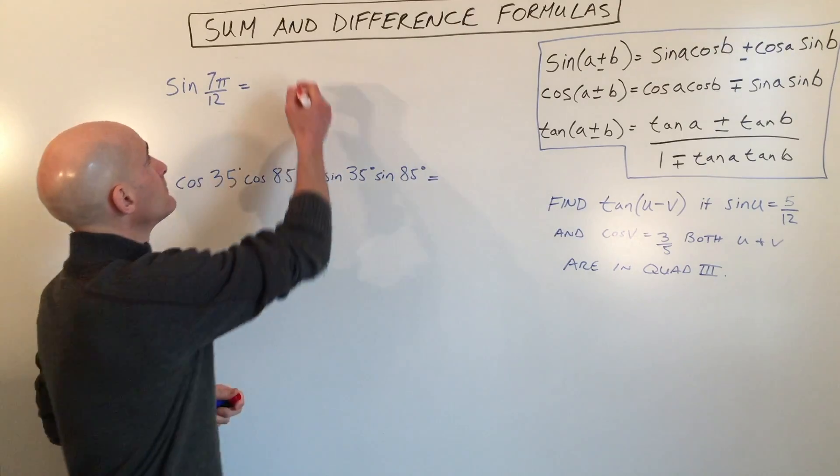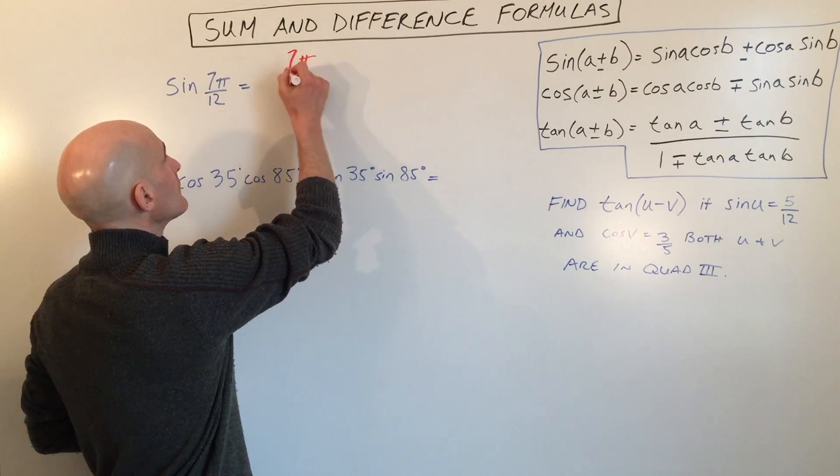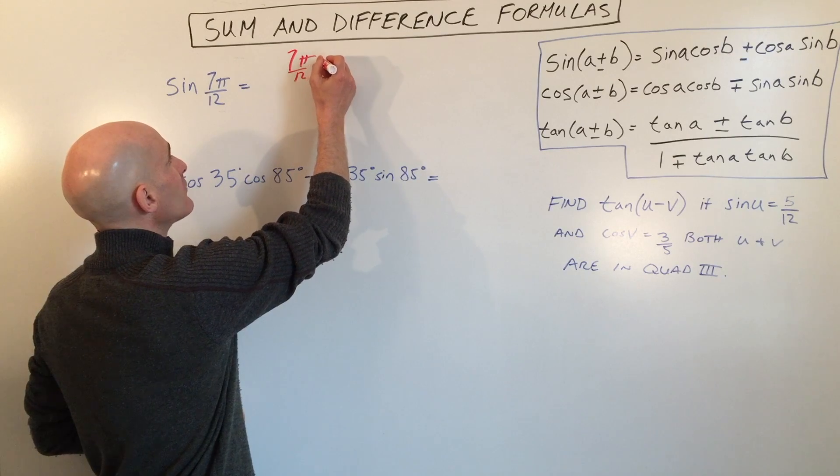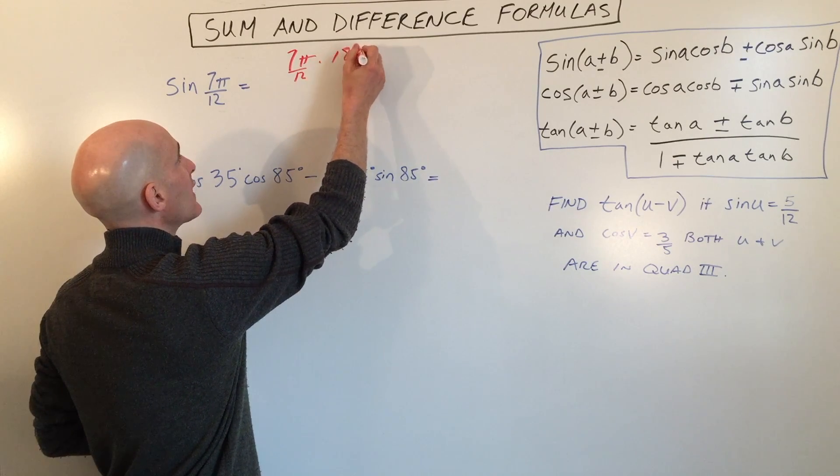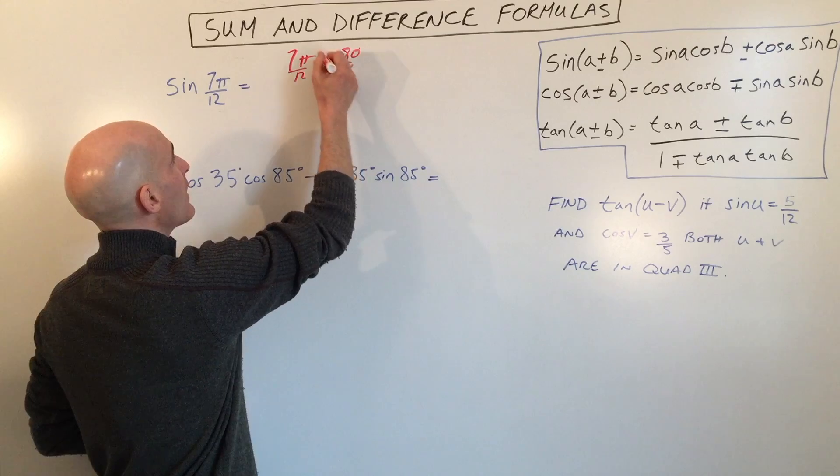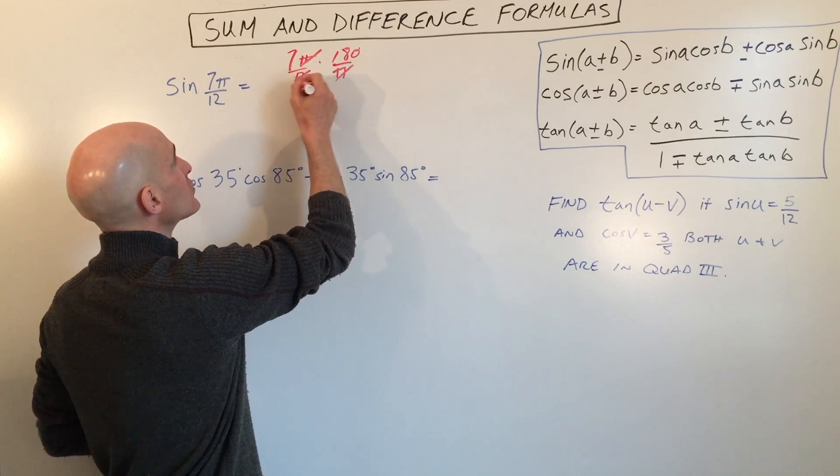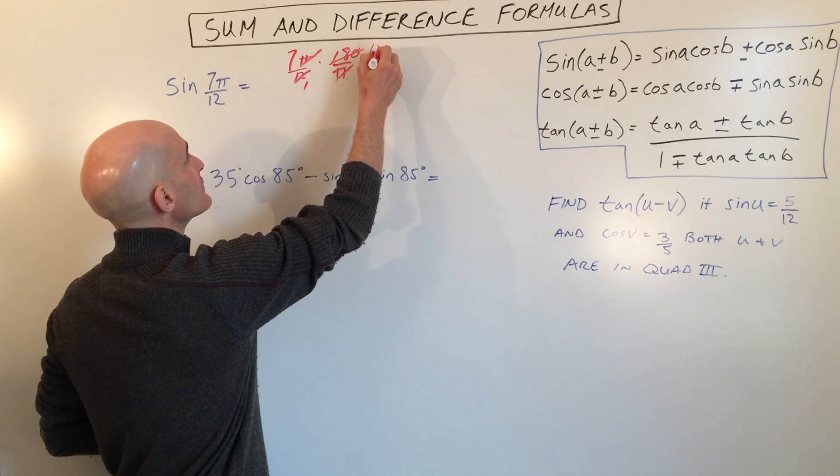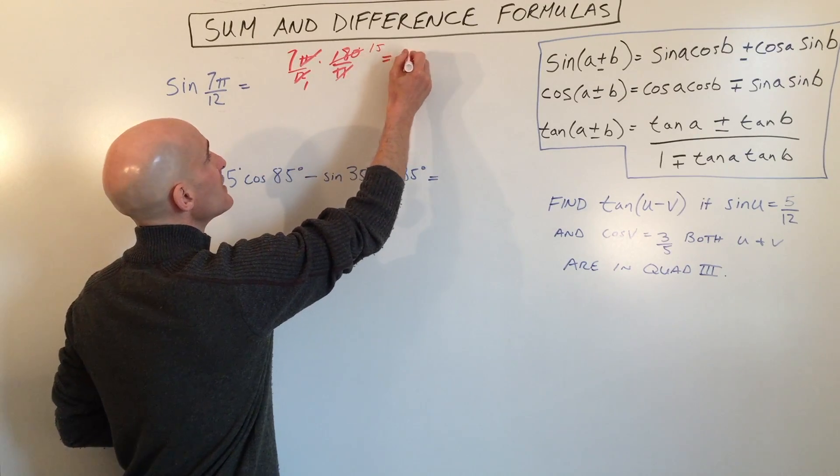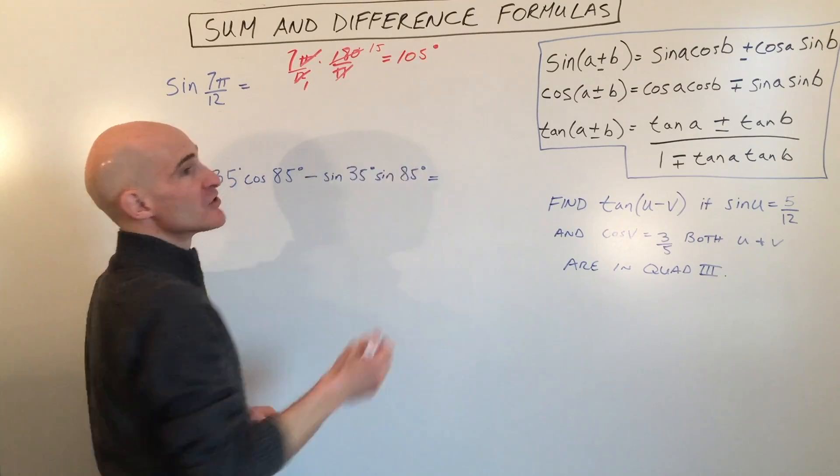So let's do that here. So 7π over 12 multiplied by 180 over π. The π radians cancel. 12 goes into 180 fifteen times. 7 times 15 is 105 degrees.